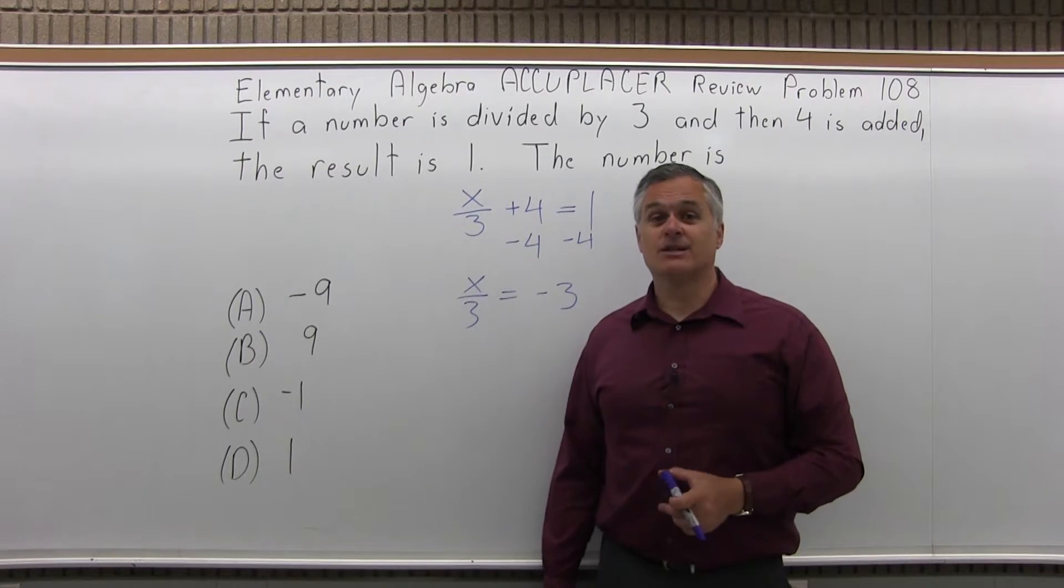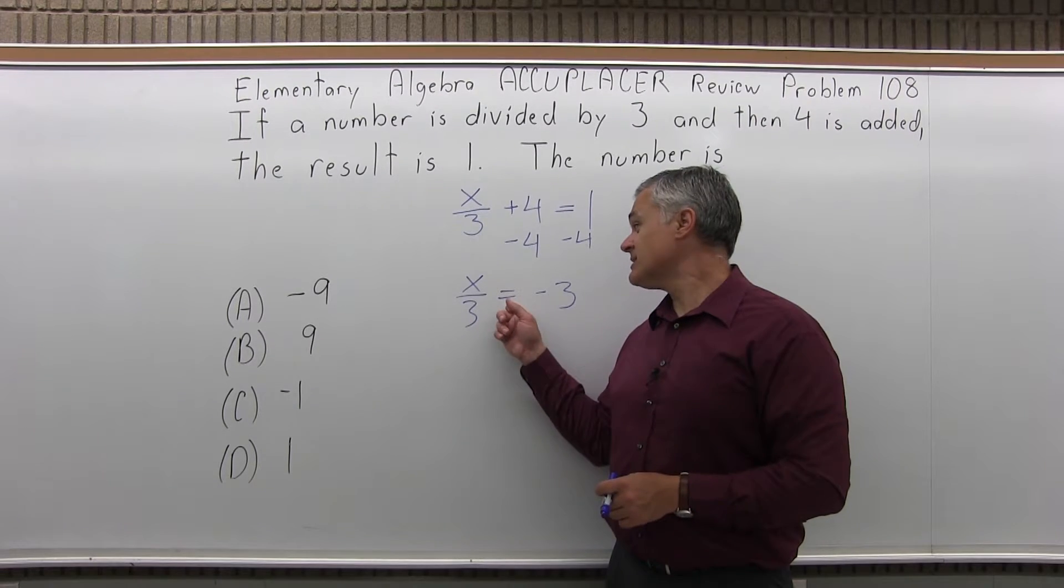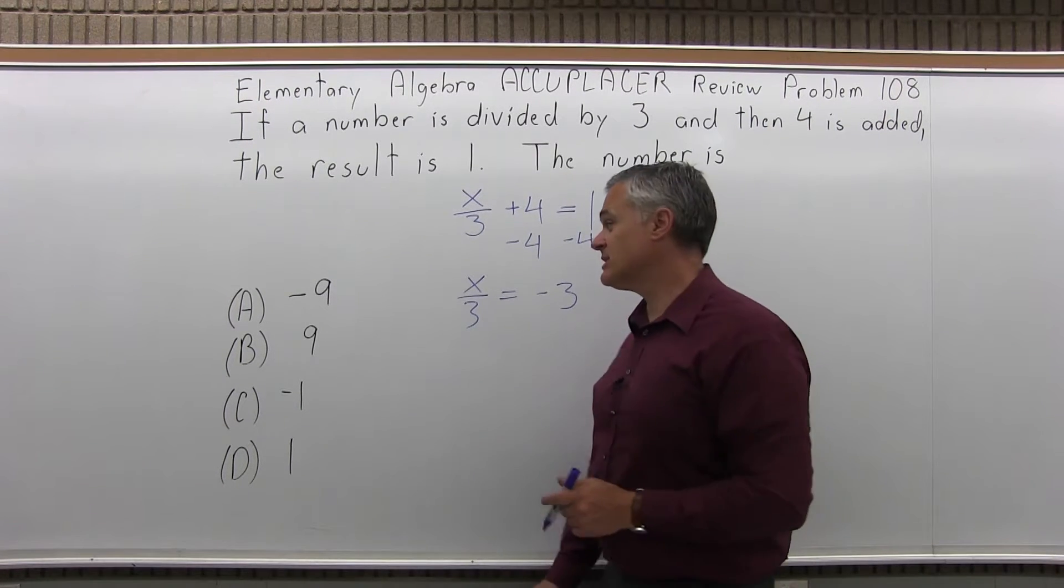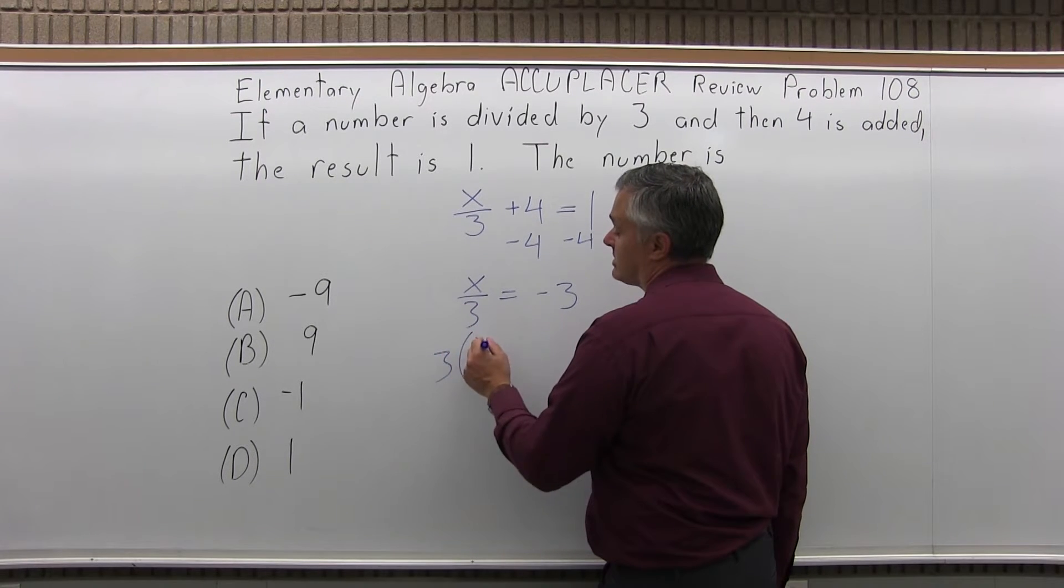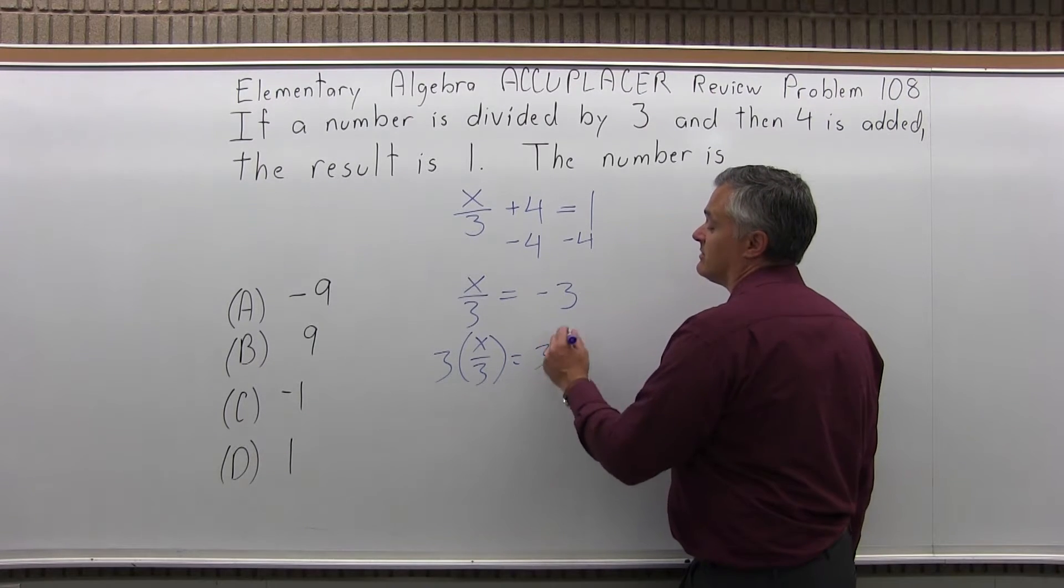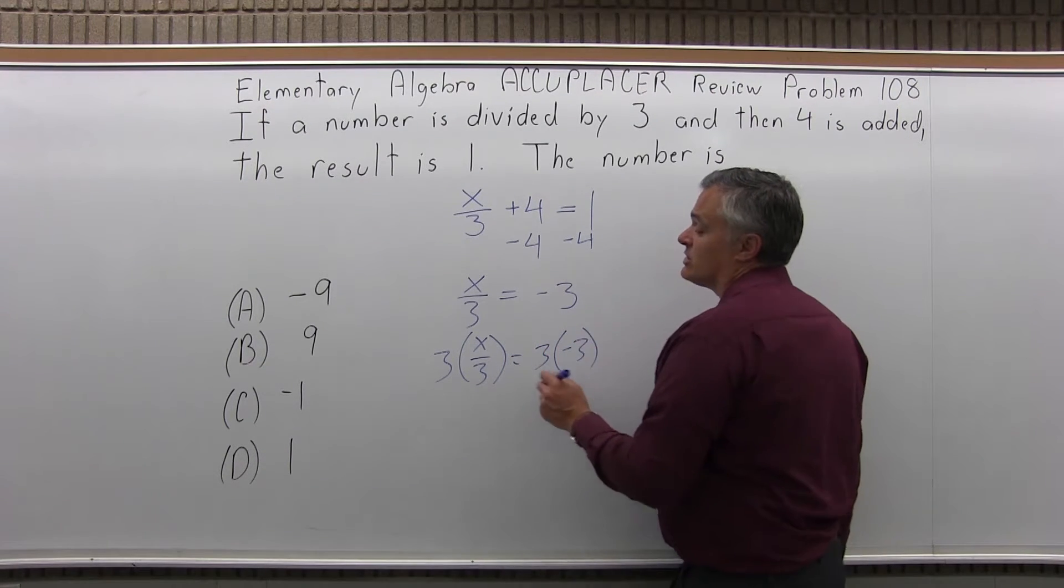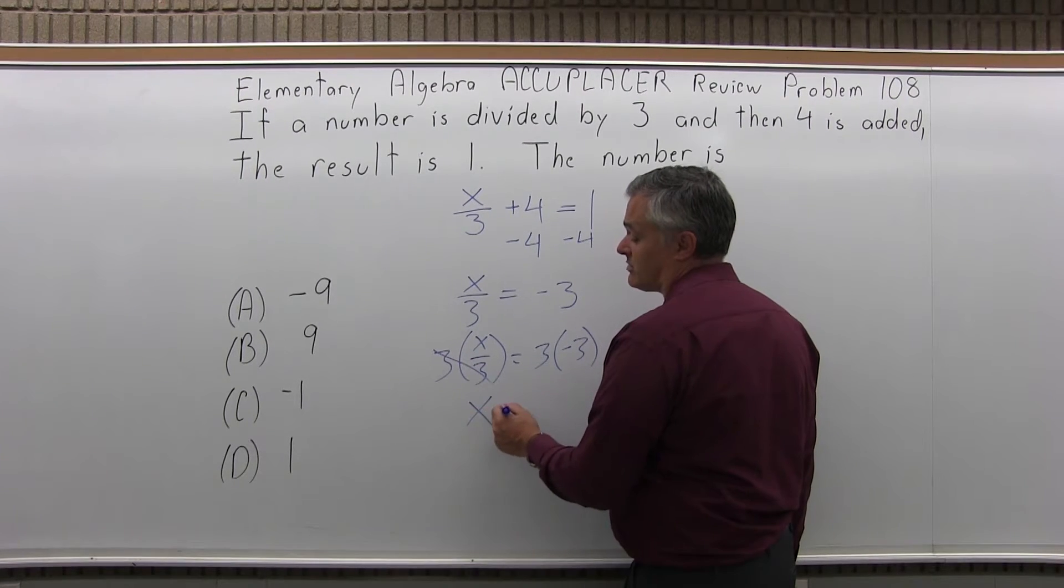Now I want to know what x equals, not x over 3. I want to get rid of that 3 in the denominator. Because I have an equation, I can do anything as long as I do it on both sides. To cancel the 3 on the left side, I'm going to multiply by 3. If I multiply by 3 on the left, I must multiply by 3 on the right. So 3 times x over 3, the 3s cancel, leaving me with x.